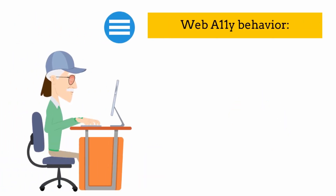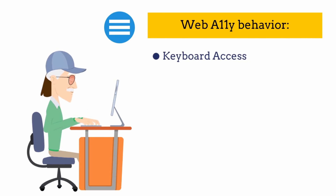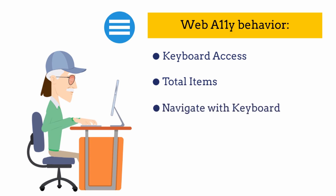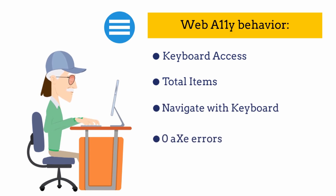Now let's cover what a web accessible hamburger must have. First, a user must be able to access the hamburger menu and the menu items using keyboard keys only. Second, a user must be informed how many menu items are available and their current position. Third, a user should be able to close the menu and get back to the hamburger using keyboard keys only. Last but not least, there should be zero dev tool errors — this includes color contrast as well.